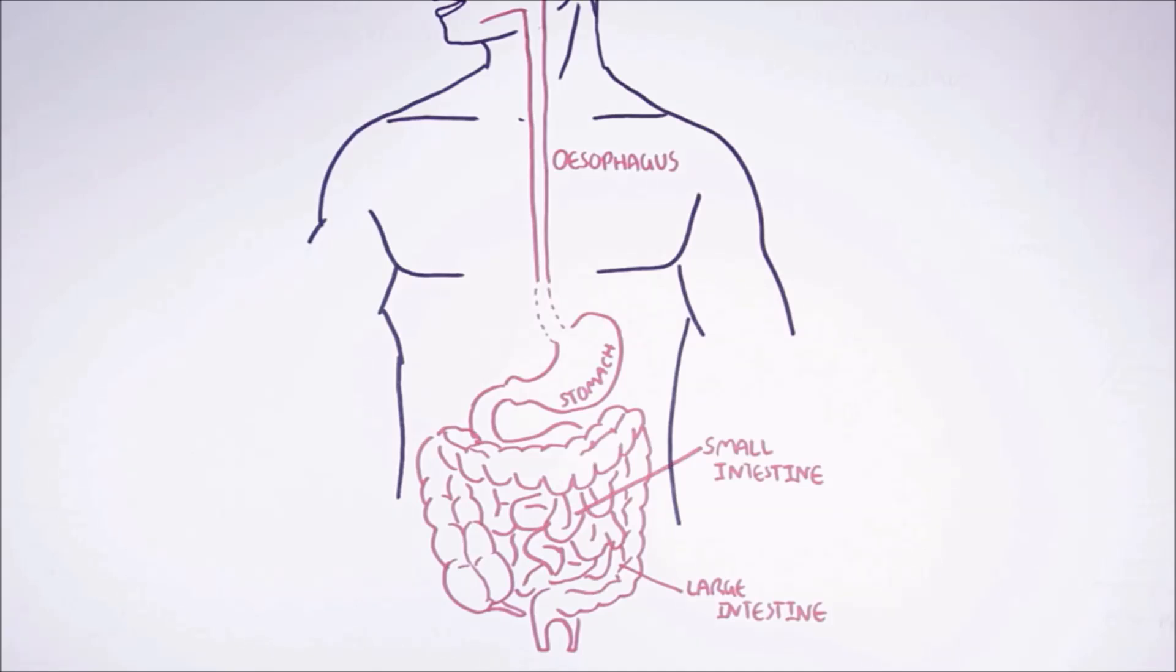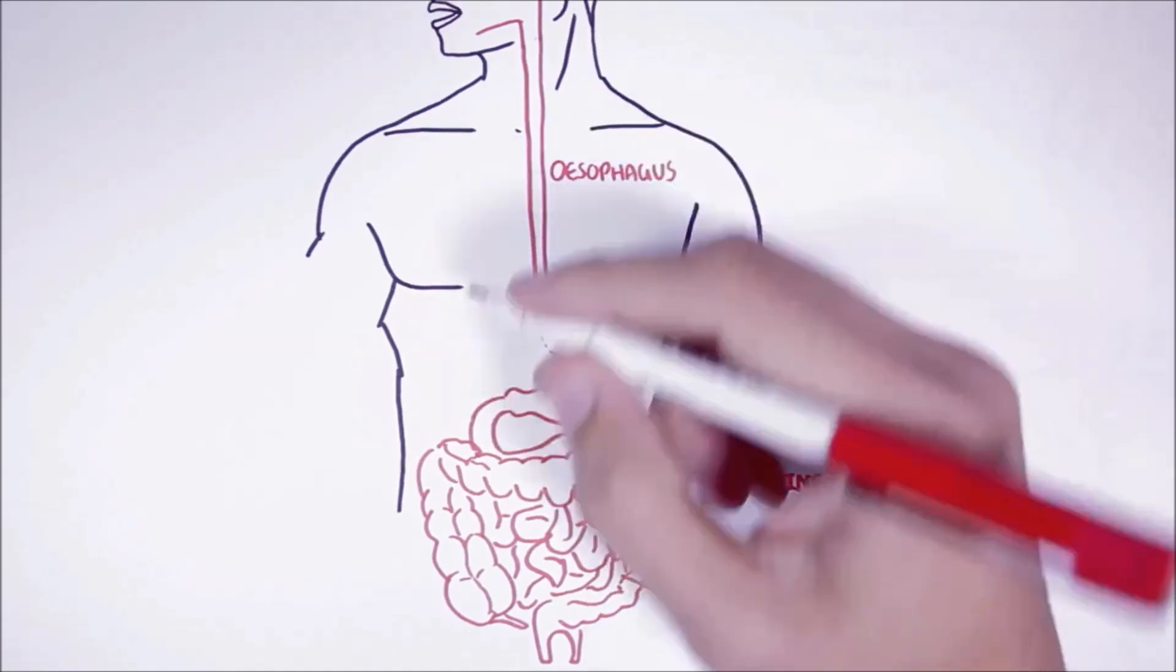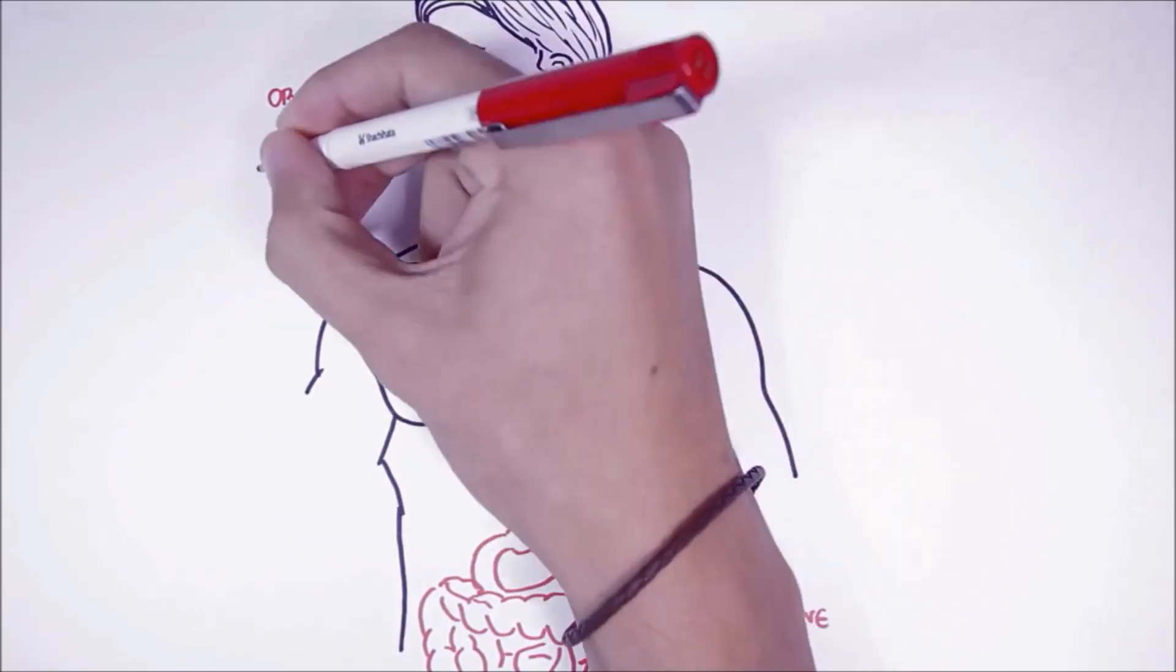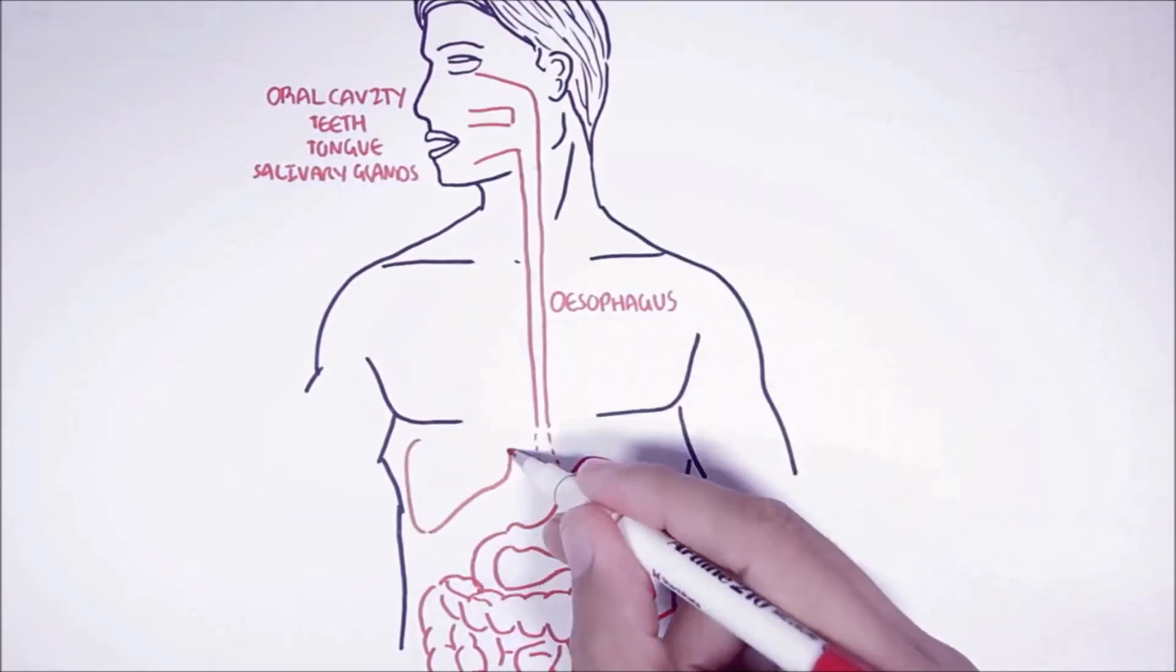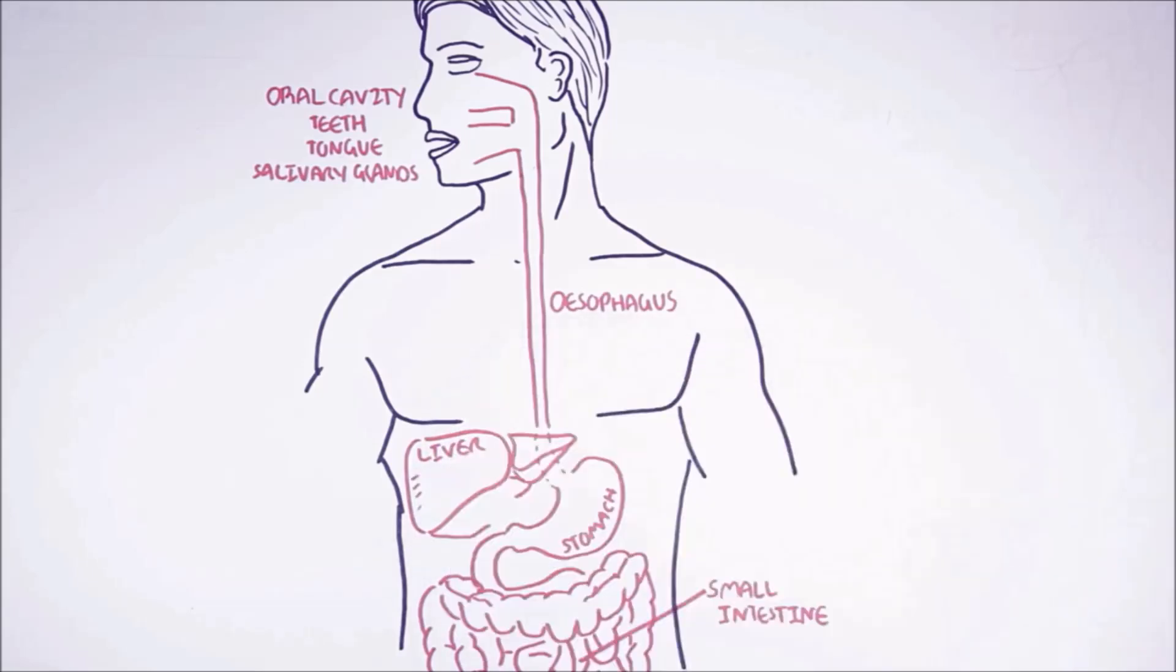But there are also other organs called accessory organs that play fundamental roles in digestion. These organs include the salivary glands, tongue, teeth, the liver, gallbladder, and the pancreas.